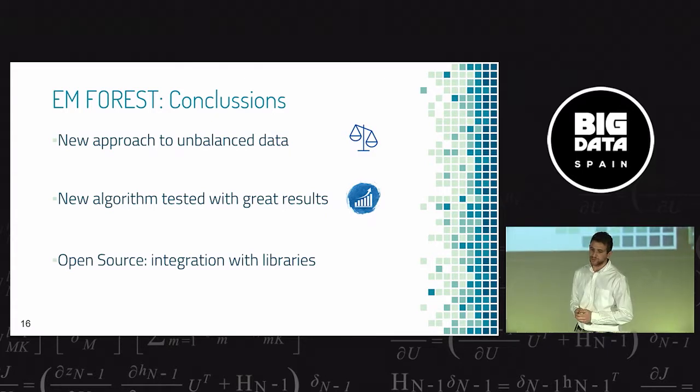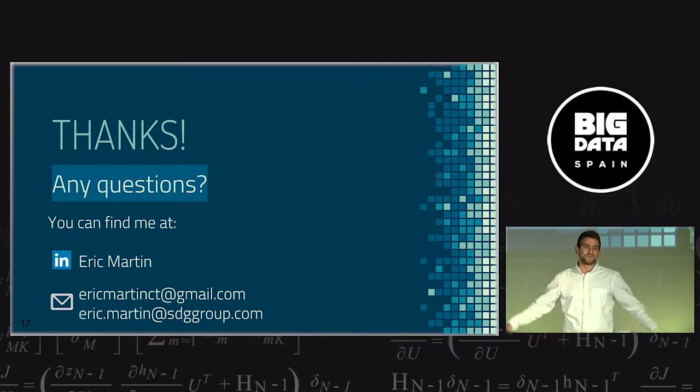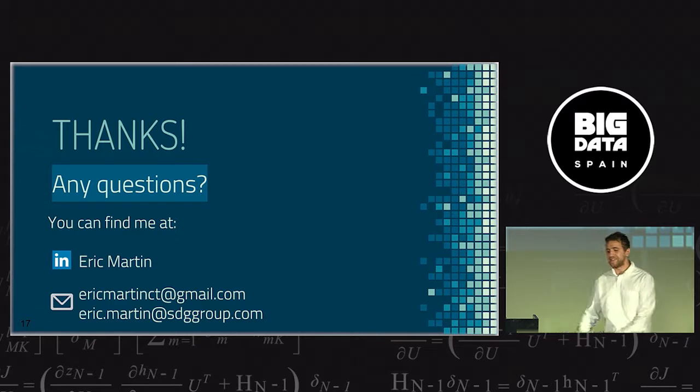As conclusions, I hope I've made a new approach to unbalanced data. I hope you like this new algorithm because I know it has really great results. Finally, my idea is to make it open source and I wish that maybe one day it's in the scikit-learn library. That's all. Thank you very much. If you want to see the beta code, you can write me to this address and I'll send you.